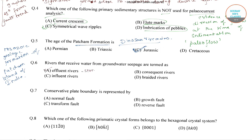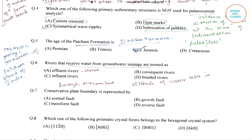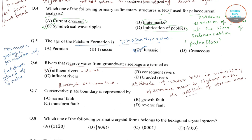Affluent rivers are streams which receive their water from groundwater seepage. They gain water from the inflow of groundwater through the stream bed. For groundwater to discharge into the stream channel, the altitude of the water table in the vicinity of the stream must be higher than the altitude of the stream bed.